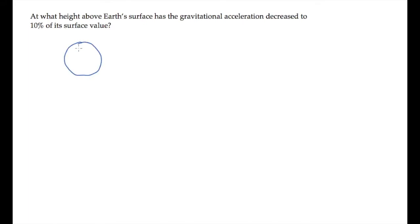This problem asks us to find the height above Earth's surface where the gravitational acceleration has decreased to 10% of its surface value. We'll call that value a, it equals g over 10, and we'll call this distance h, the height above Earth's surface where that value of a occurs.